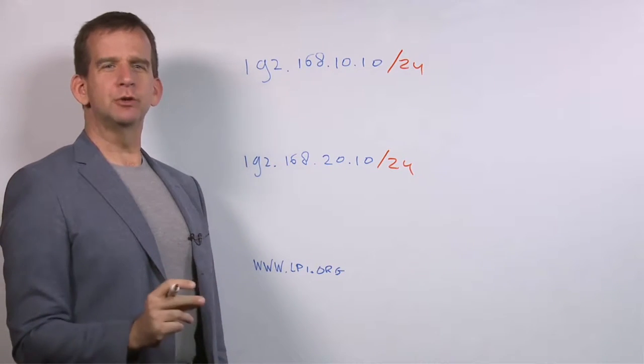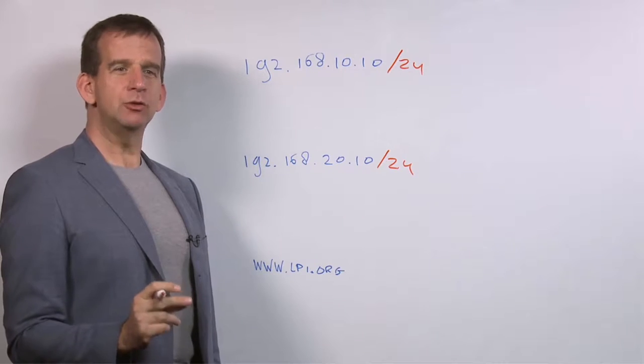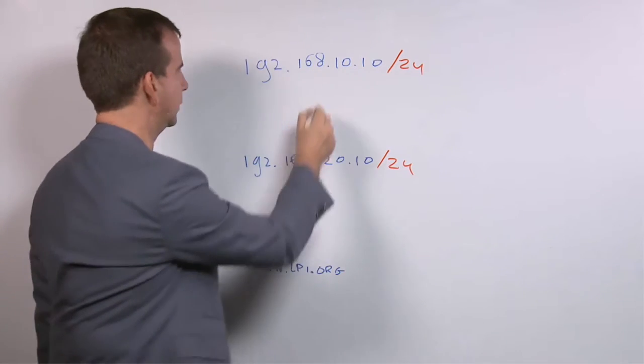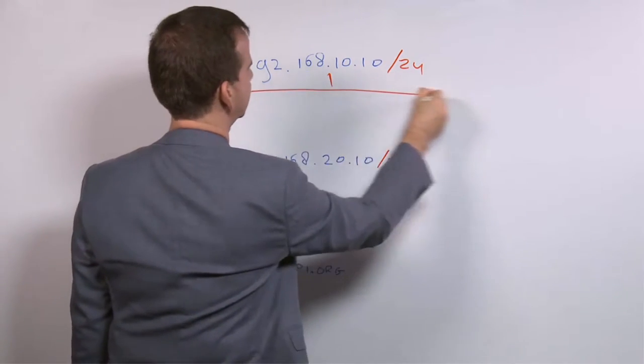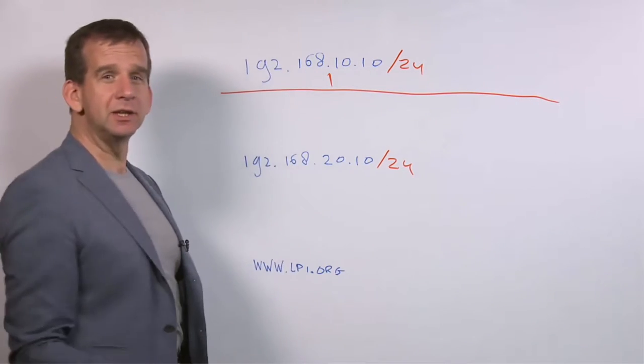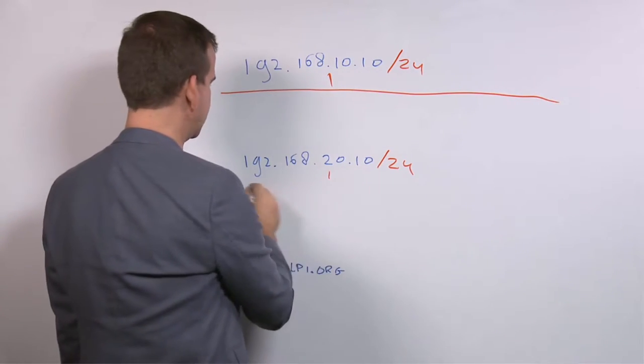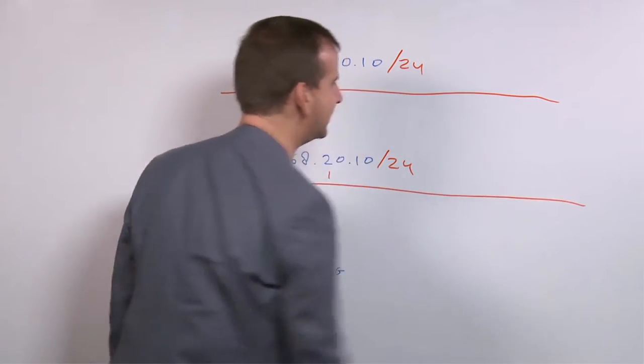Now if a computer is on a different network, you need to know how to get to that different network. So let's say that this is the network where the 10 IP address is on and this is the network where the 20 IP address is on.